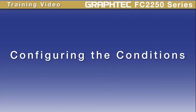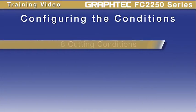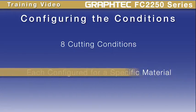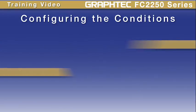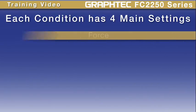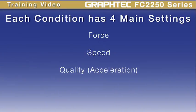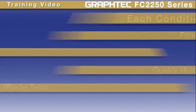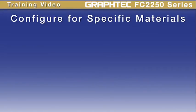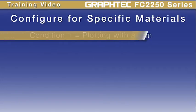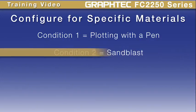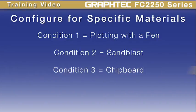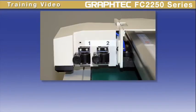In this lesson we'll learn how to configure the cutting conditions. The FC 2250 has eight cutting conditions that are presets, each configured for a specific type of material or type of cutting. Each condition has four main settings: force, speed, quality (which is another word for acceleration), and offset (which is the blade type). There are other settings such as thick that can be assigned to conditions as well. For instance, condition 1 can be configured for plotting with a pen, condition 2 for sandblast, condition 3 for chipboard, and so on.